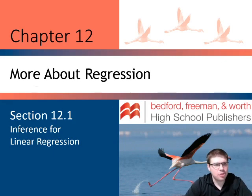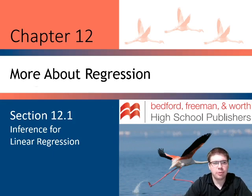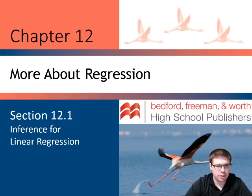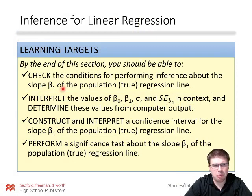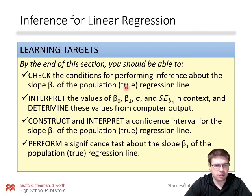Hey EP Statistics, welcome to chapter 12, our last chapter. In this section 12.1, we're going to be doing inference for linear regression. By the end of this section you should be able to check the conditions for performing inference about the slope beta sub 1, which is the true slope of the population regression line.